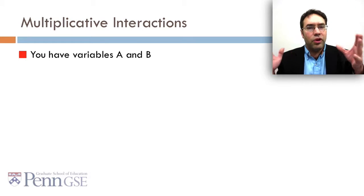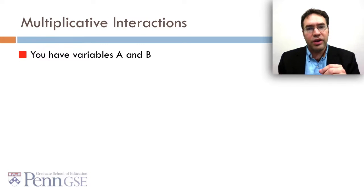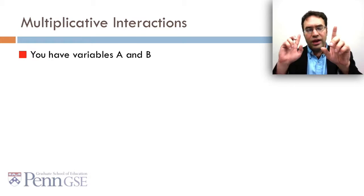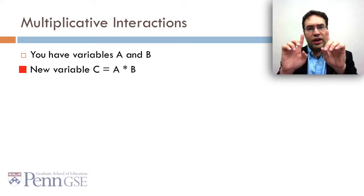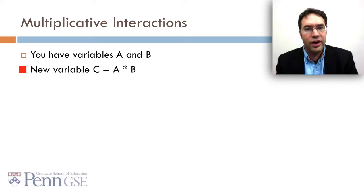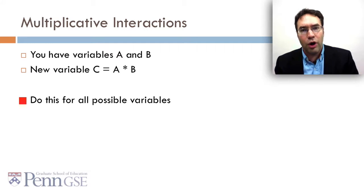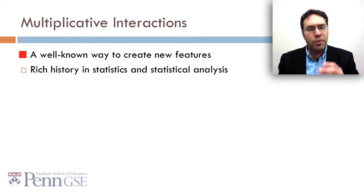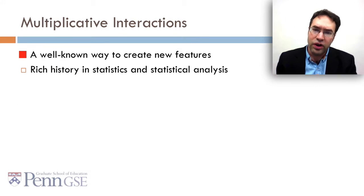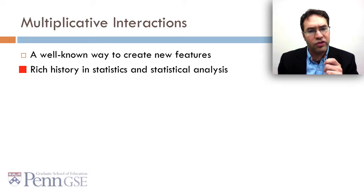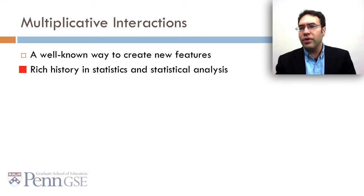One example is multiplicative interactions. With multiplicative interactions, you have two variables A and B. You take them, you multiply them together, you get a new variable C. And if you're doing automated feature generation, you do this for all possible variables. Multiplicative interactions is a well-known way to create new features and it's got a rich history in statistics and statistical analysis. It long predates analytics or data mining.